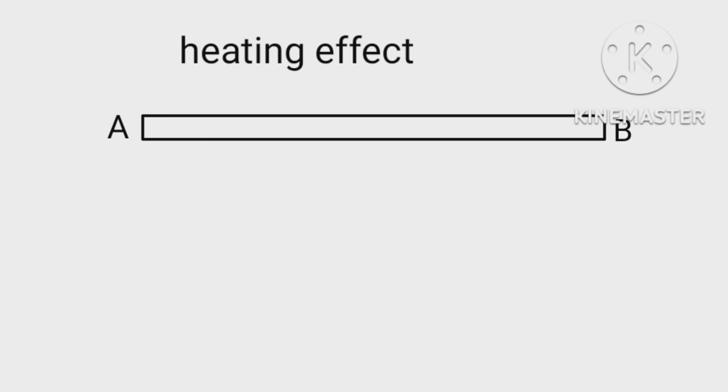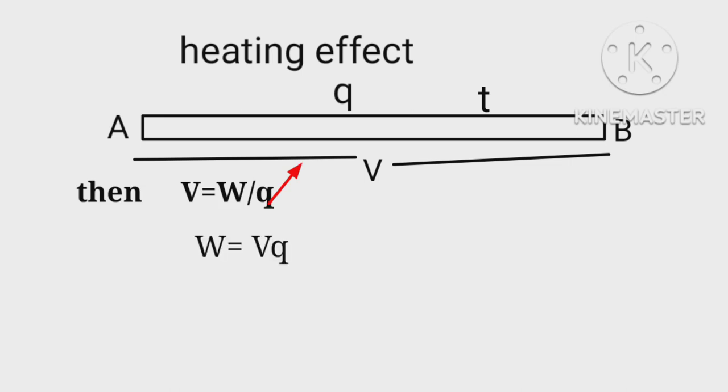Let a charge q is flowing through it for time t. Then V equals W upon q, therefore W equals Vq. Now when electrons flow, a kind of work is done.